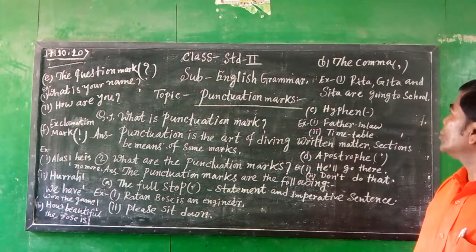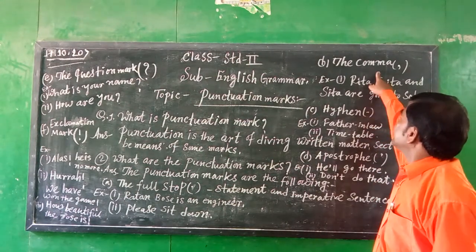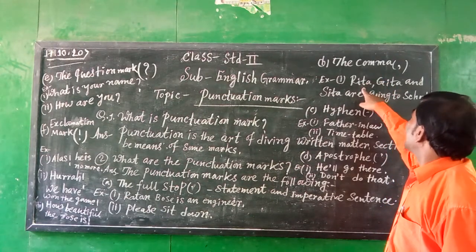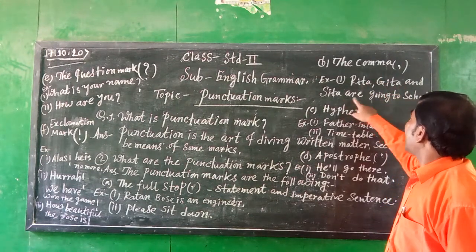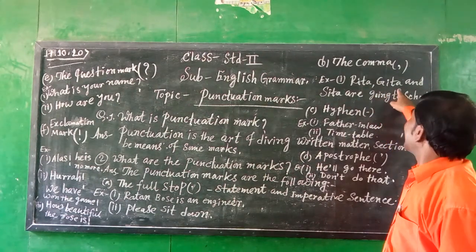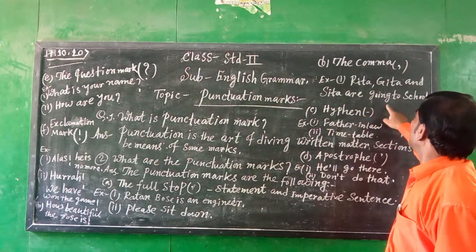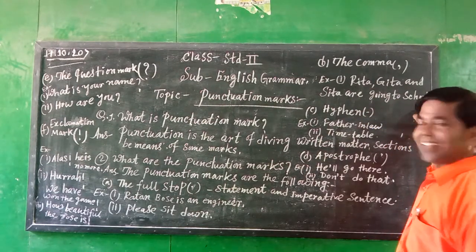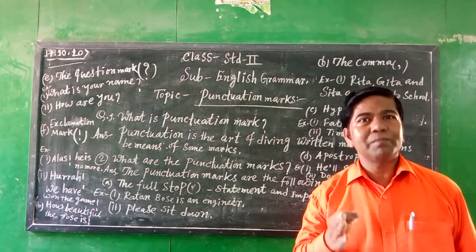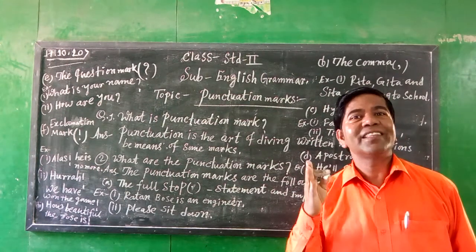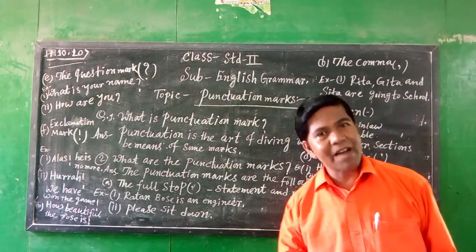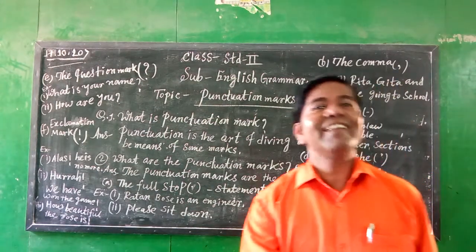Number two: the comma. For example, Rita, Gita and Sita are going to school. Ram, Sam and Jodhu are three friends.